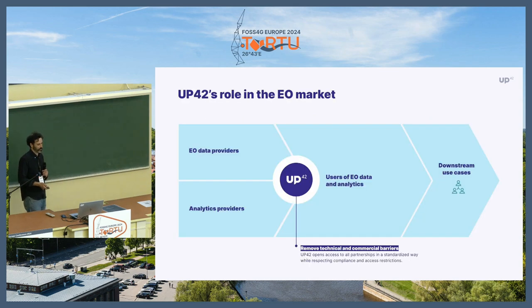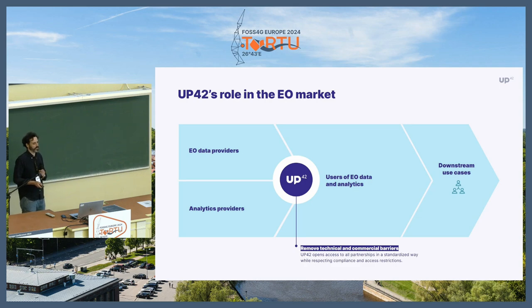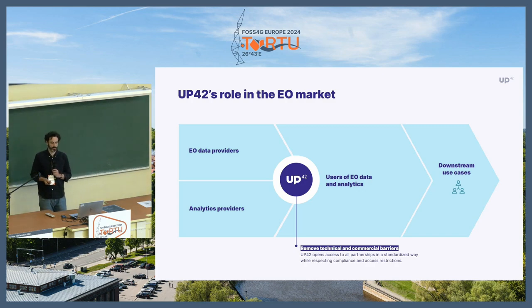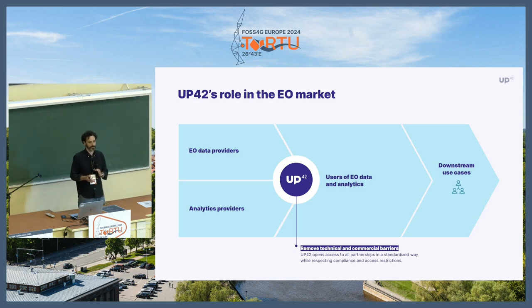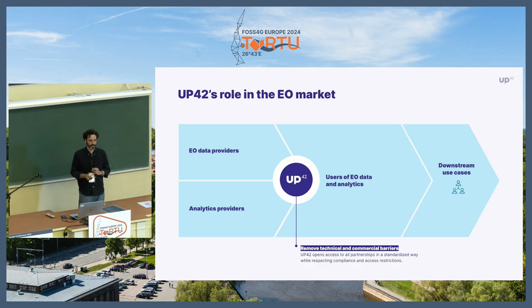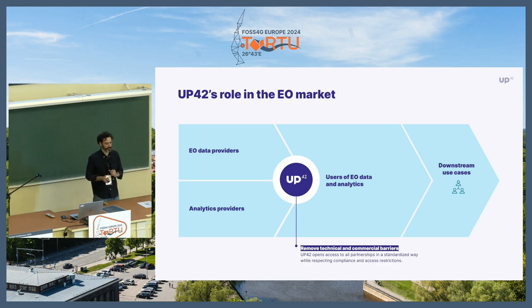We like to praise ourselves as provider agnostic because our users can leverage a wide diversity of data providers, ranging from Airbus to Planet to Sentinel or Black Sky and more. We have dozens of data providers in our platform. We also offer best-in-class algorithms for pre-processing and processing of the data that our customers buy. We have a pretty unique offering that enables very interesting use cases downstream. You can go to our blog and website to see some of what our users are doing with our platform.